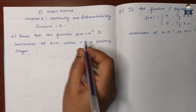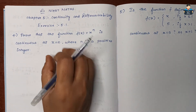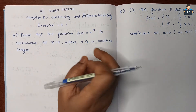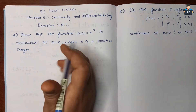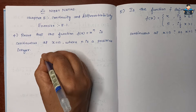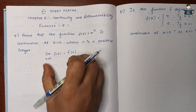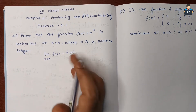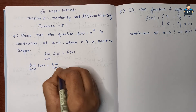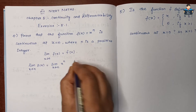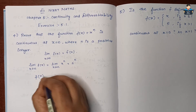So here we need to show that the limit value is equal to the function value at x = n. The function value is f(n) = n^n. We split and find the limit: limit x tends to n of f(x), where f(x) = x^n.